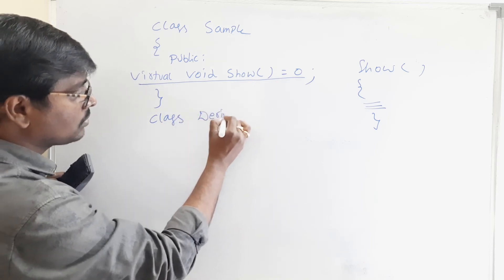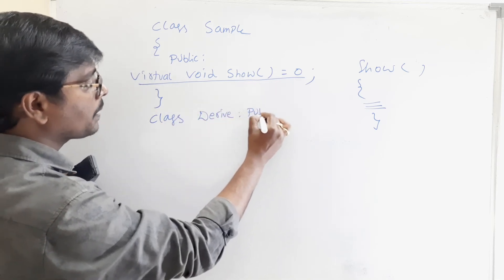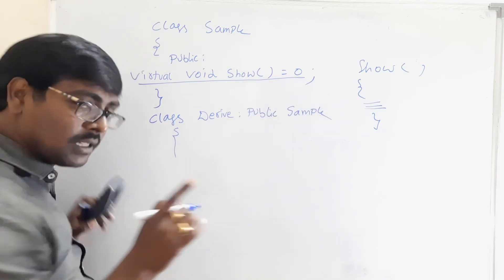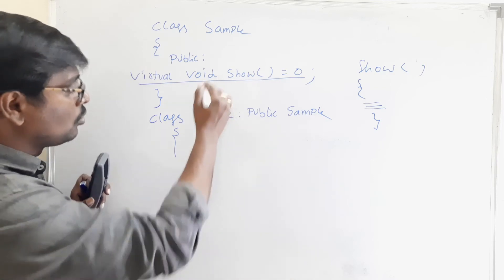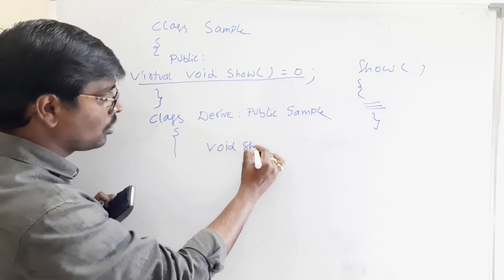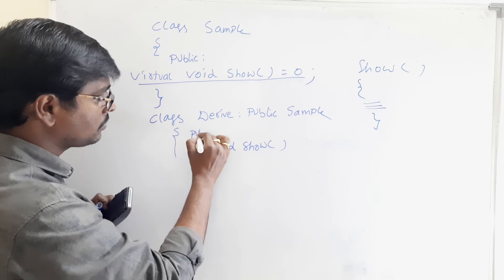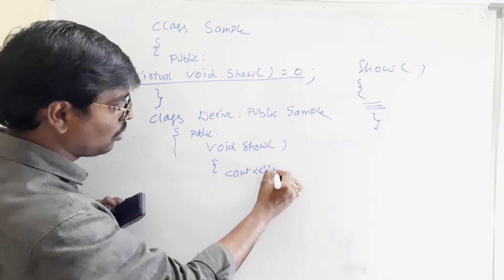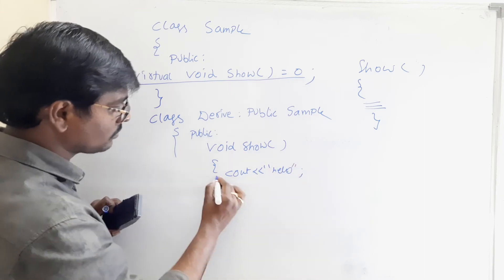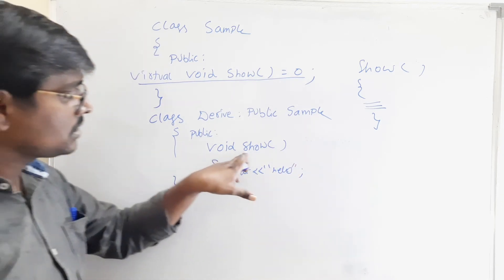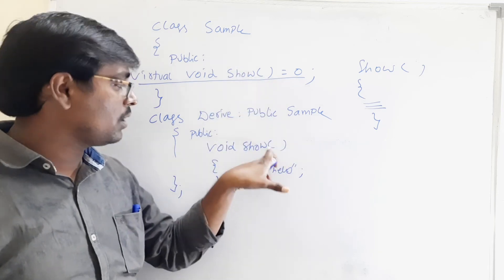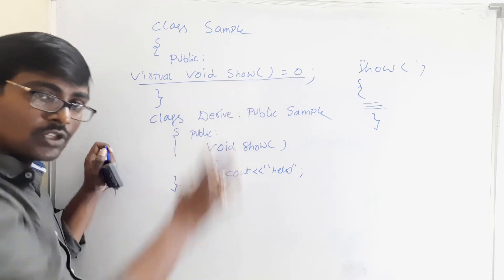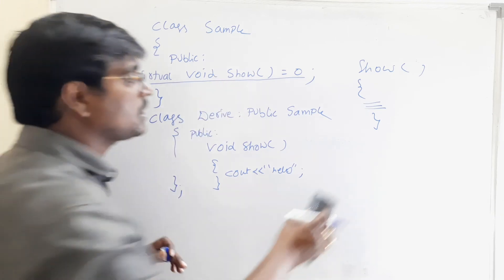Next, we have class derived, which inherits from public sample. In the derived class, remember, we have to provide the definition to the method show(). So: void show() { cout << "hello"; }. In the derived class we have to provide the definition. This is an example of a pure virtual function, or equivalently, an example of an abstract class — both are the same.